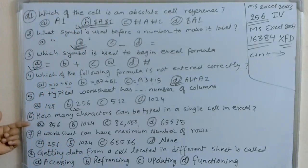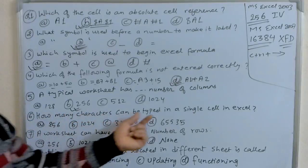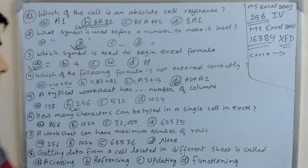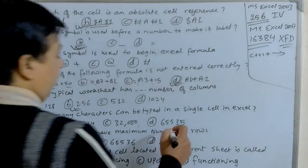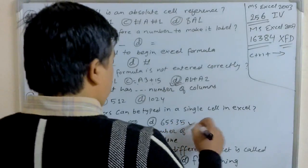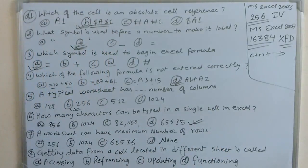The next question is: how many characters can be typed in a single cell in Excel? We can type 65,535 characters. That's why D is the answer.